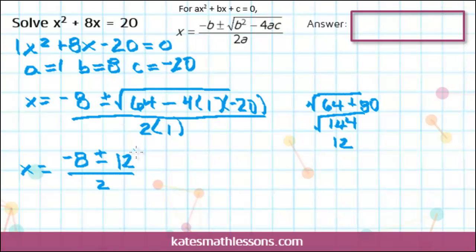Once you get to this part where you've simplified the square root, you're going to split it up into two separate answers. So we're going to write it out once with a positive sign, and once with a negative sign.